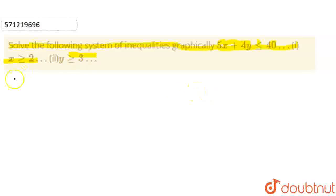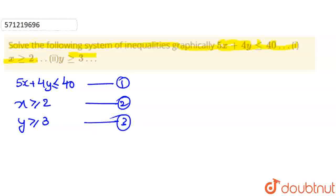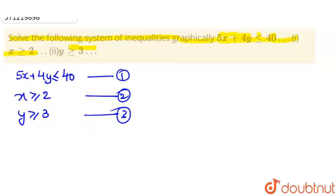First of all, we will write down all the given equations: 5x plus 4y less than or equals to 40; x greater than or equals to 2; and y greater than or equals to 3. That is our first equation, second equation, third equation. We will consider the first equation and draw its graph by finding the points through which this line will pass.